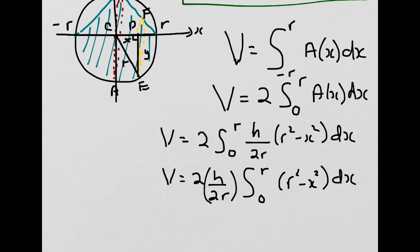In this case, the 2s cancel out, and I get the volume equals h over r. Integrating from 0 to r using the sum rule, I get r²x - x³/3 evaluated from 0 to r.